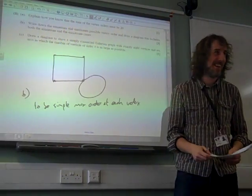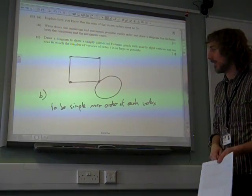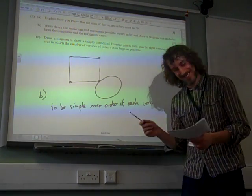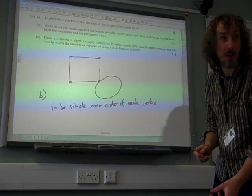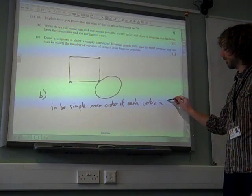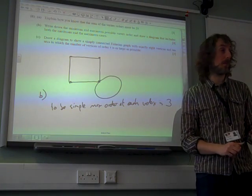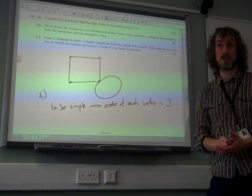And we're back. Right, to be simple, the max order of each vertex has got to be three, isn't it? Yeah. Okay, in order for it to be simple. If it's more than three, then it's no longer a simple graph.